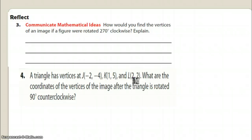But anyway I know you can do the math and figure that out. Then it asks us if you have a triangle with vertices J, K, L which is negative 2 comma negative 4, 1 comma 5, and 2 comma 2, it asks us what are the coordinates of the vertices of the image after it is rotated 90 degrees counterclockwise. Okay, go ahead and stop it. Please write this down or work in your book and come back and we'll see.